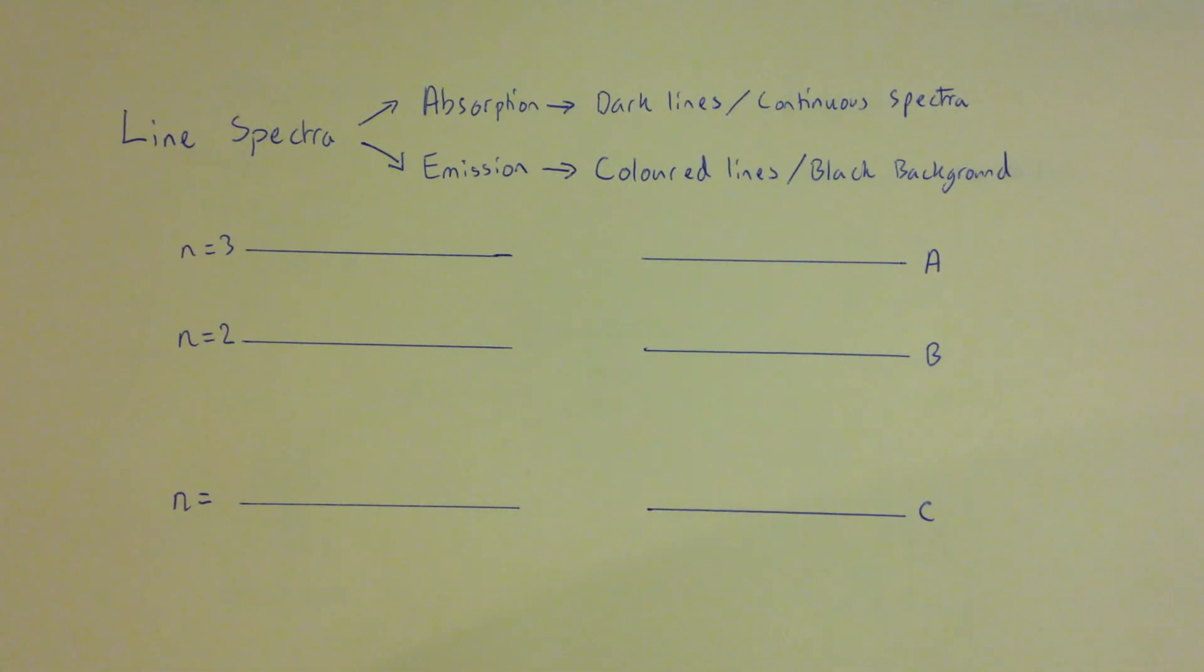If it's in the gas state, then you tend to get line spectra, typical of emission spectra or absorption spectra, because we have very discrete energy levels because the molecules in the gas are spread out.